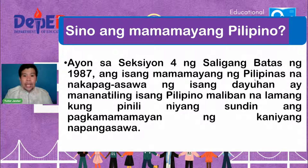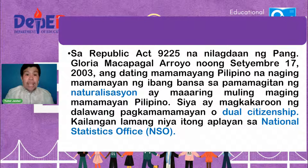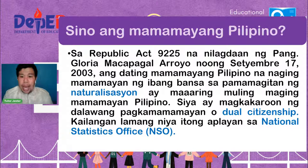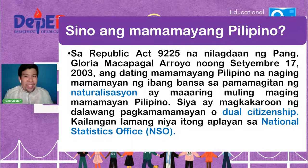Sa Republic Act 9225, na nilagdaan ng ating dating Pangulong GMA o Gloria Macapagal-Arroyo noong Setyembre 17, 2003, ang dating mamamayang Pilipino na naging mamamayan ng ibang bansa sa pamamagitan ng naturalisasyon ay maaaring muling maging mamamayang Pilipino. Siya ay magkakaroon ng dalawang pagkamamamayan — sa Ingles, tinatawag nating dual citizenship — maaaring Pilipino, maaaring banyaga. Kailangan niyang i-apply sa NSO o National Statistics Office, o sa Philippine Statistics Agency.